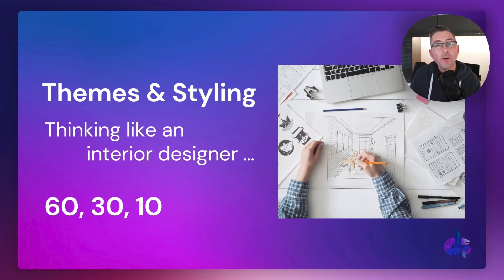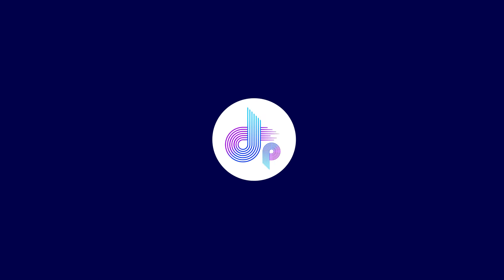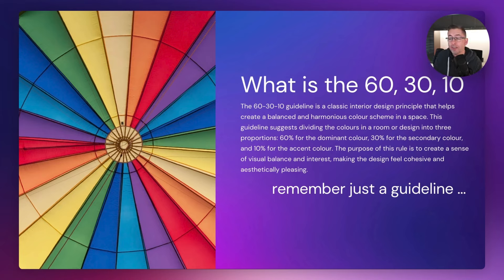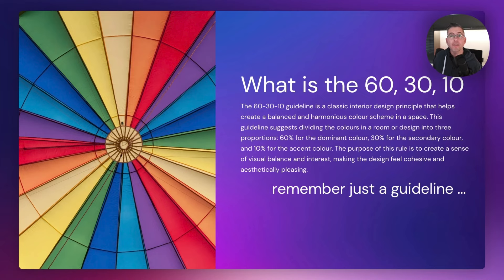Let's get cracking. The guideline I'm going to introduce you to is the 60-30-10 guideline. Now this is just a guideline, not a rule — there could be some variation — but it's a good starting point. Think of it this way: 60% of your UI will be a dominant color. This could be the background — it could be white or blue — but it's going to be dominant on your UI.